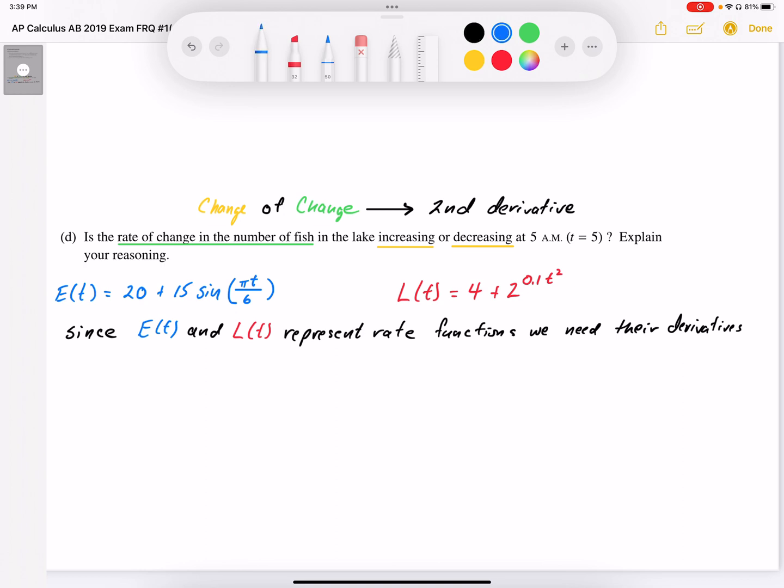So the first thing we'll do then is, once we recognize that we need the derivative of the E(t) and L(t) functions, I'm going to differentiate these, so I'm going to get E'(t) is equal to,